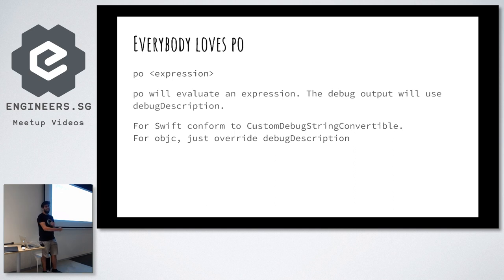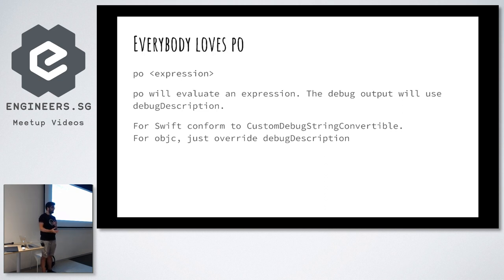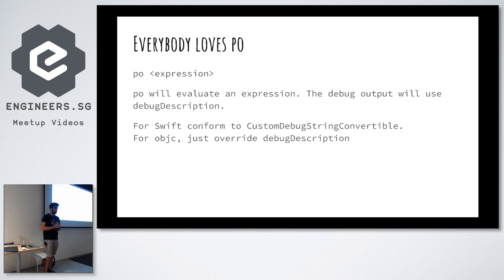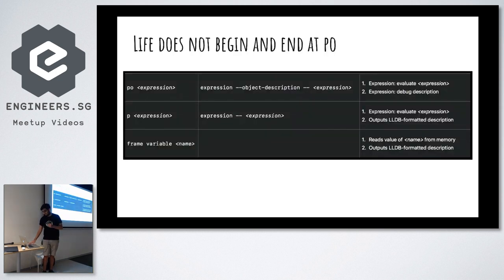Let's say you are debugging some SDK — a black box SDK from Apple that you need to use — and you need to add your own debug formatter to it, but you can't modify the SDK. One way would be to swizzle the `debugDescription` method, or do some runtime hackery. But actually there is a much easier way, and that is using LLDB.